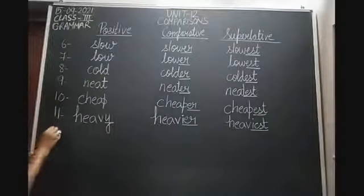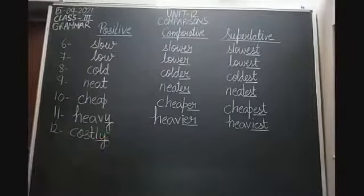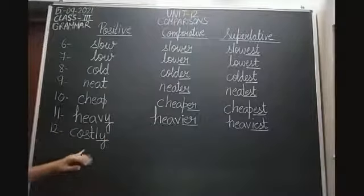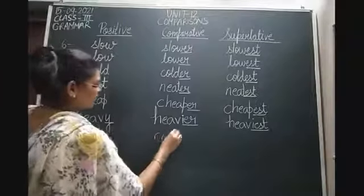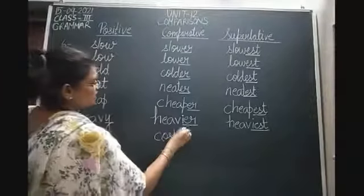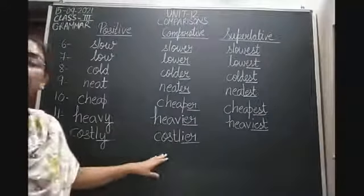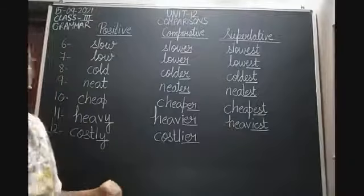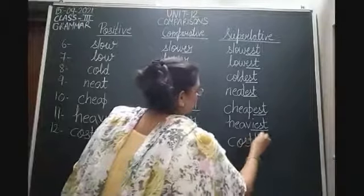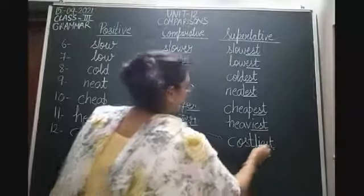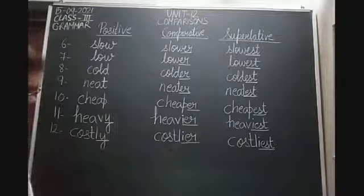The twelfth word is costly. Costly ends in Y, so we apply the same rule. Remove the Y and replace with IER for the comparative degree, giving costlier. Remove the Y and replace with IEST for the superlative degree, giving costliest. So: costly, costlier, costliest.